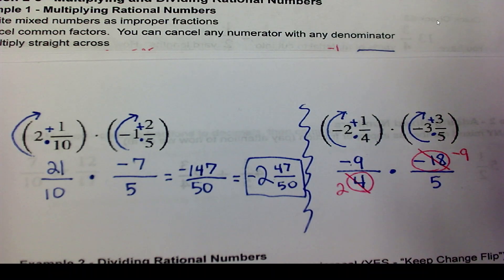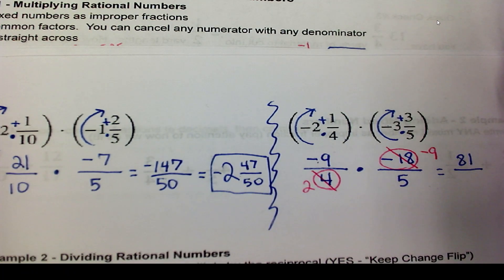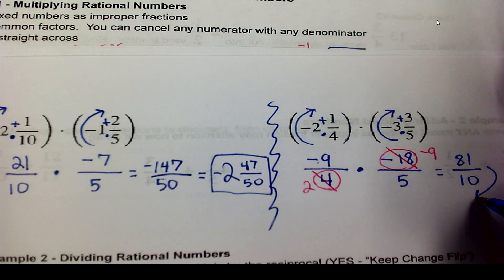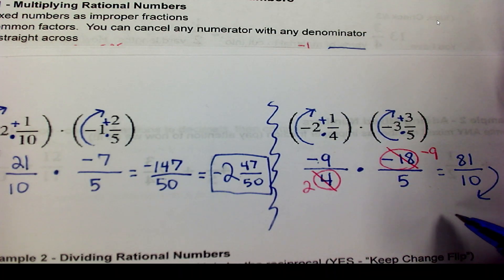Multiply straight across. We'll get 81 over 10. That is an improper fraction, so let's just come down here and make it to a mixed number.